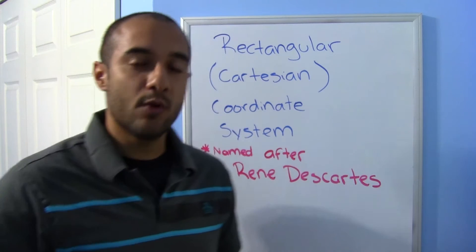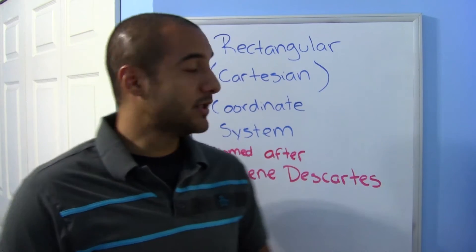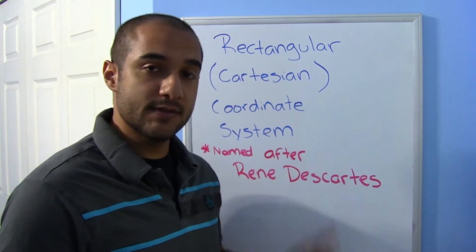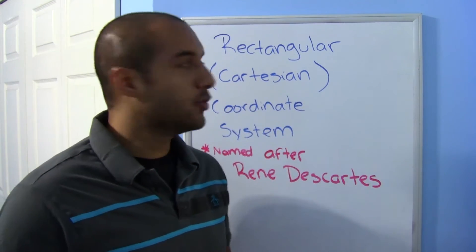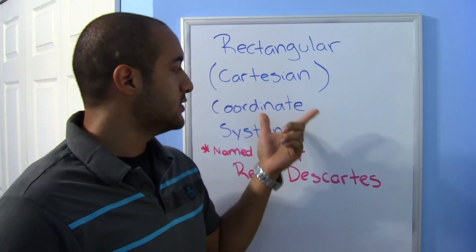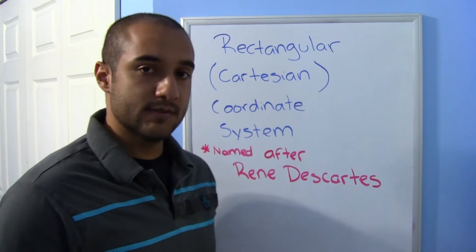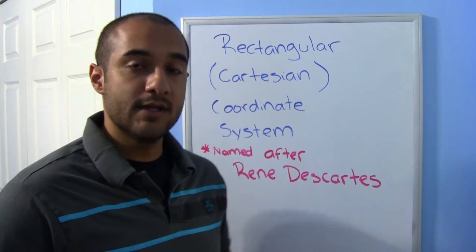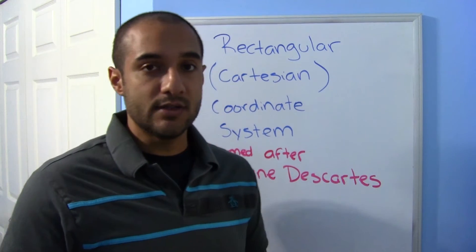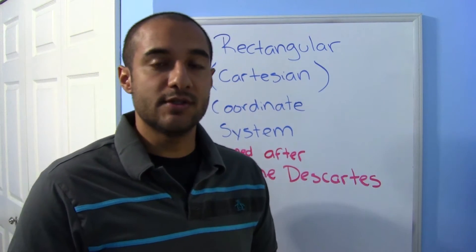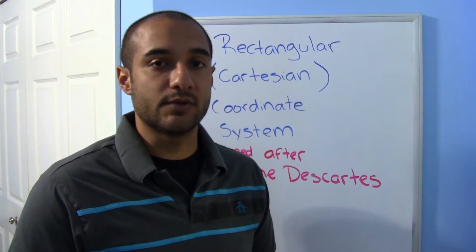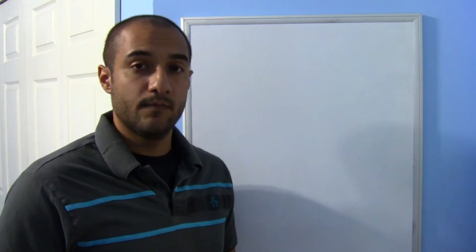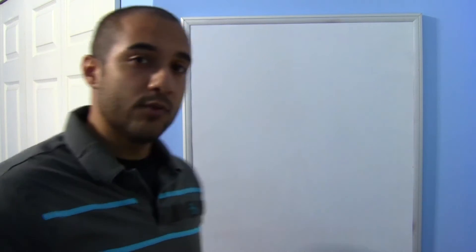Hello ladies and gentlemen, welcome back. Today we'll be looking at the rectangular coordinate system, also known as the Cartesian coordinate system, named after René Descartes, a French mathematician and philosopher. Let's get started.